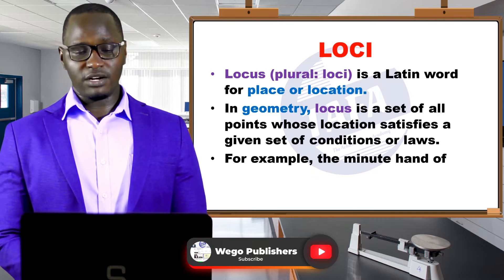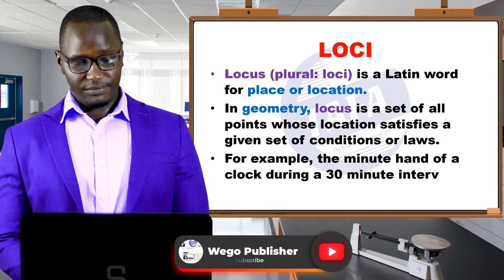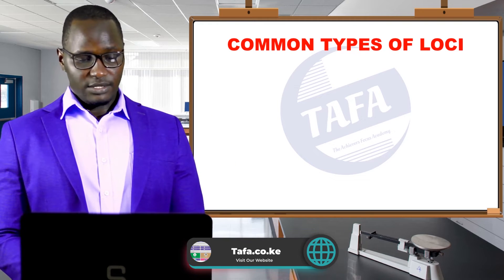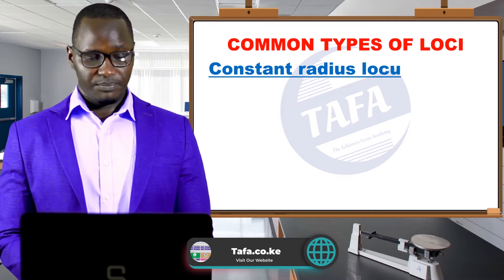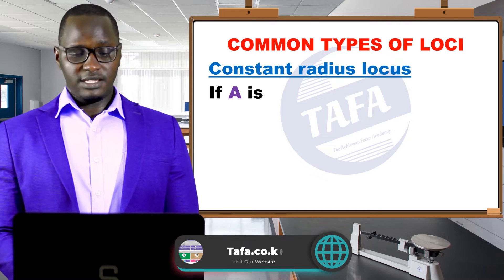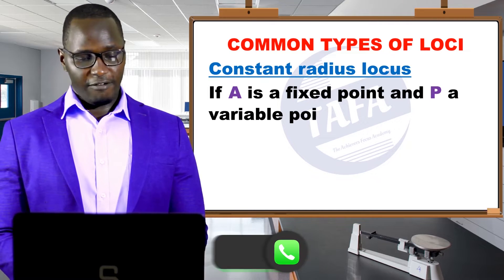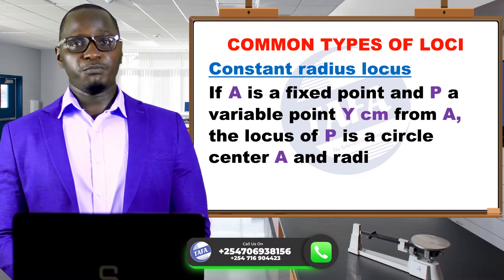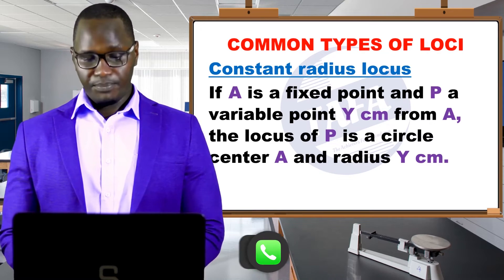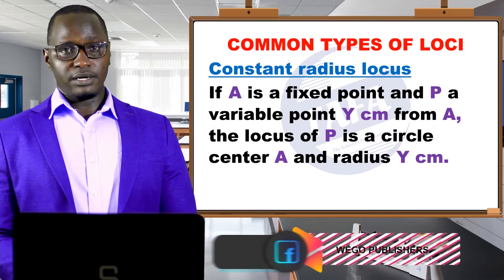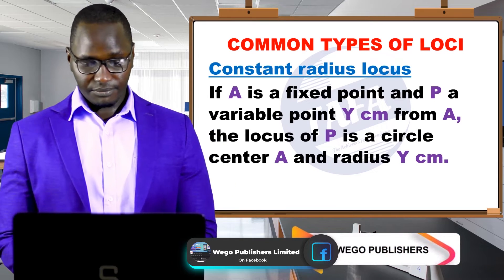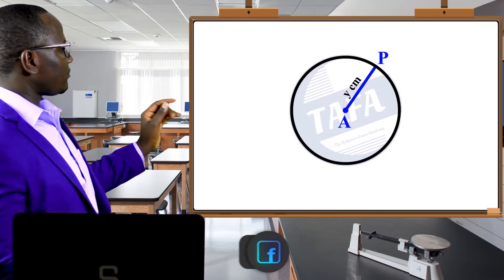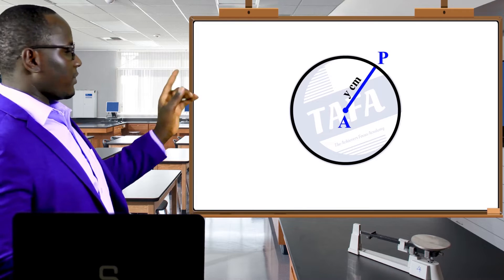For example, the minute hand of a clock during a 30-minute interval. Let us look at the common types of loci. The first one is the constant radius locus. If A is a fixed point and P a variable point Y centimeters from A, the locus of P is a circle with center A and radius Y centimeters.